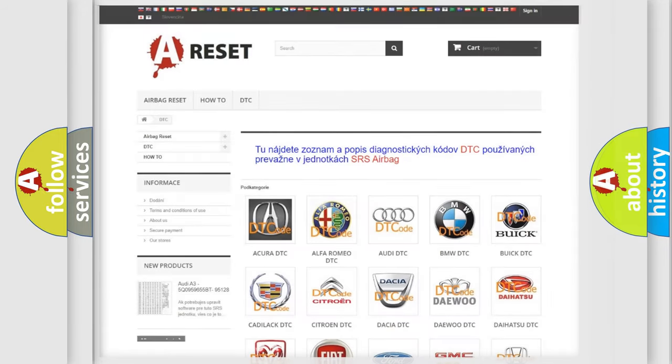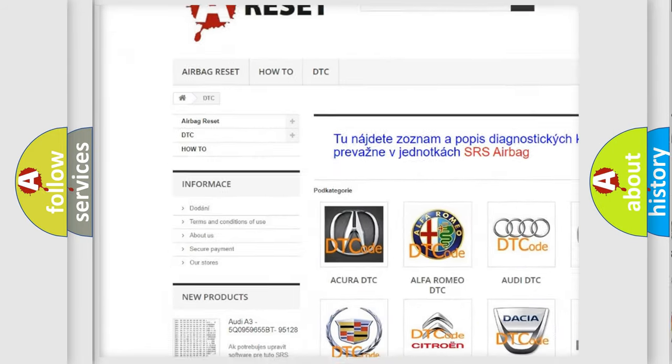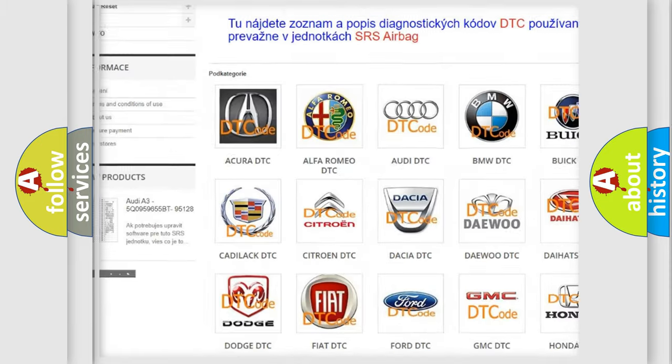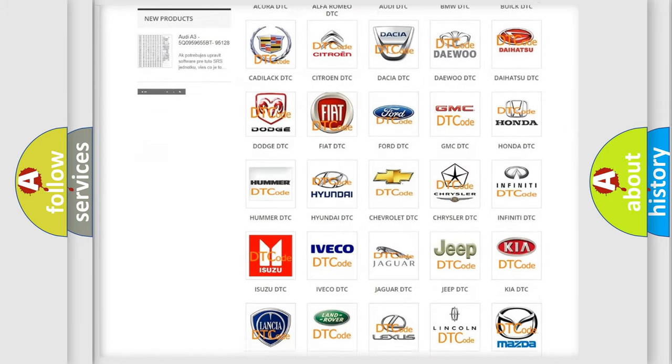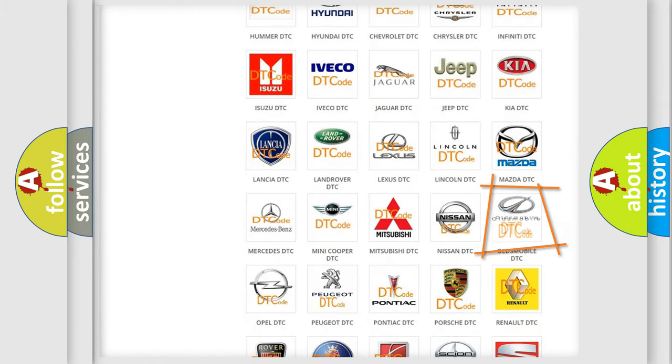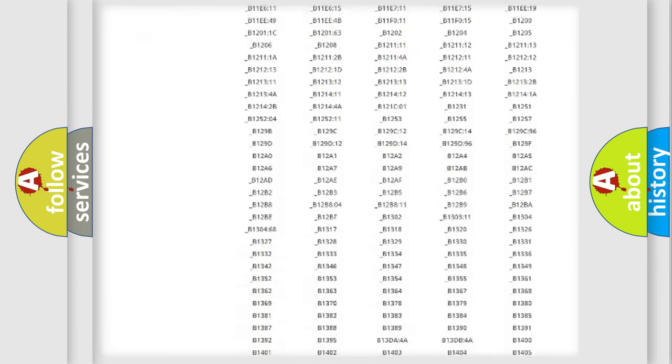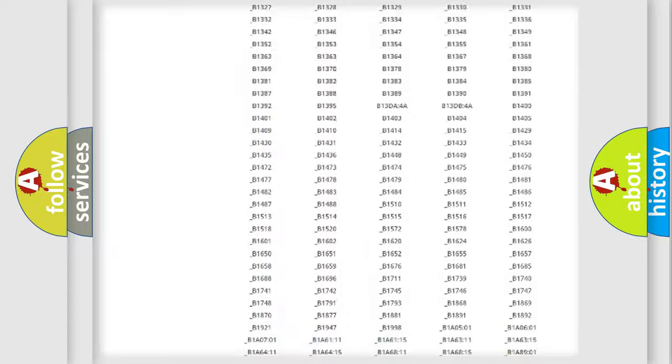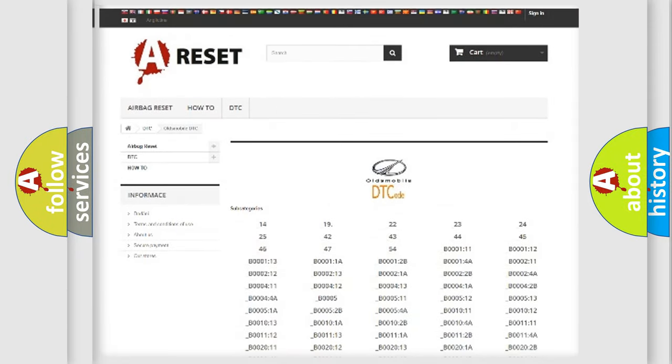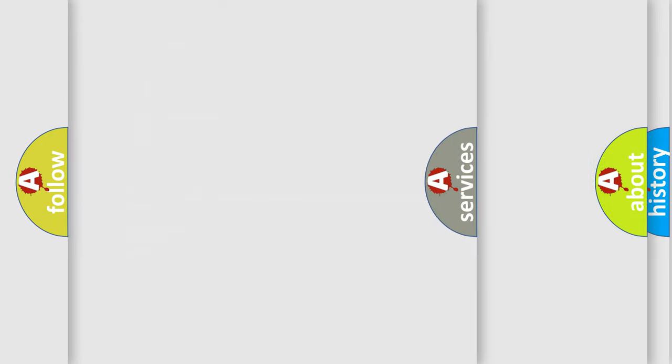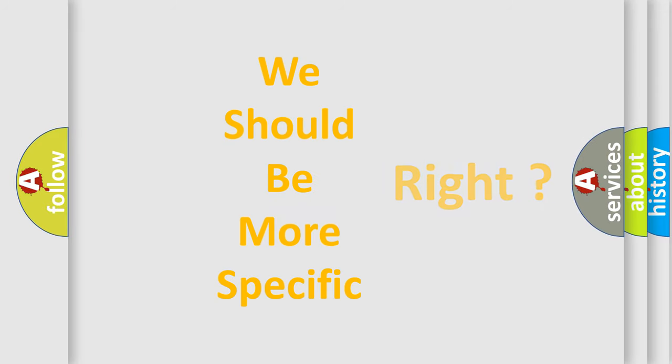Our website airbagreset.sk produces useful videos for you. You do not have to go through the OBD2 protocol anymore to know how to troubleshoot any car breakdown. You will find all the diagnostic codes that can be diagnosed in a car, Oldsmobile vehicles, and also many other useful things. The following demonstration will help you look into the world of software for car control units.